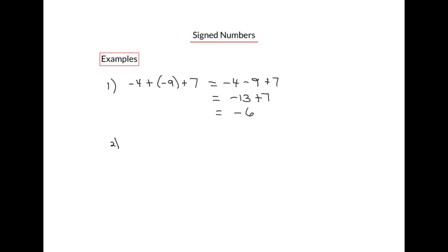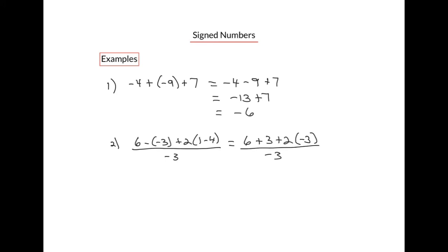One more example: 6 minus minus 3 plus 2 bracket 1 minus 4 all divided by negative 3. We only want one sign per number, so minus and minus becomes 6 plus 3, applying the rules of multiplication. Next, we do the brackets: 1 minus 4 is negative 3, since the temperature is 1 degree and goes down 4. Then we do the multiplication: positive 2 times negative 3 is negative 6, since the signs are different. Then 6 plus 3 is 9. Then 9 minus 6 is 3. And finally, 3 divided by negative 3 is negative 1.